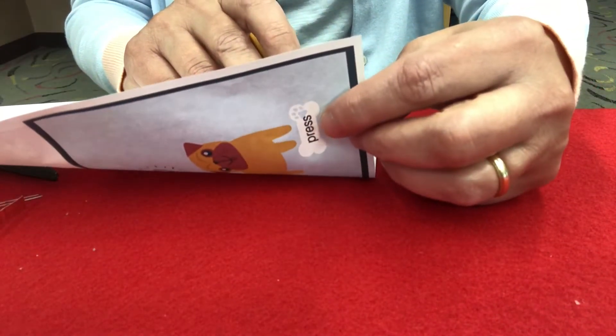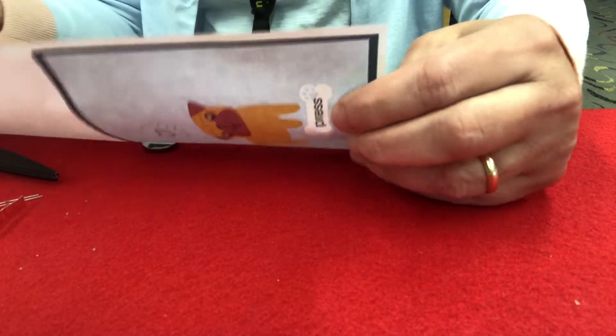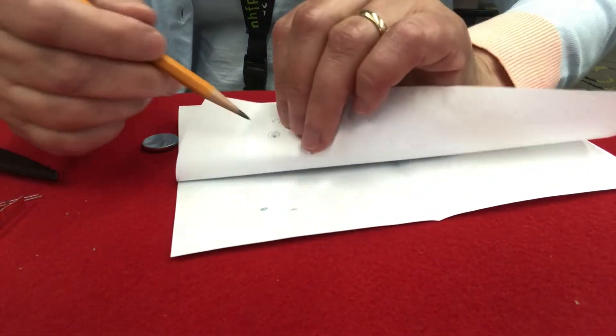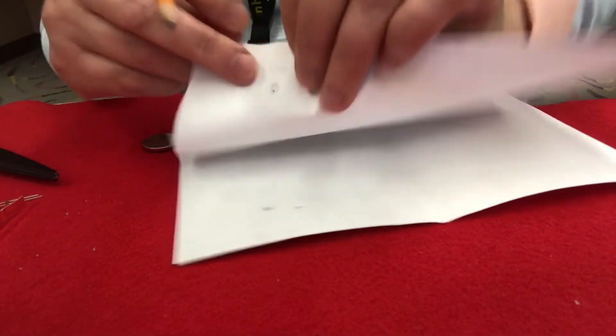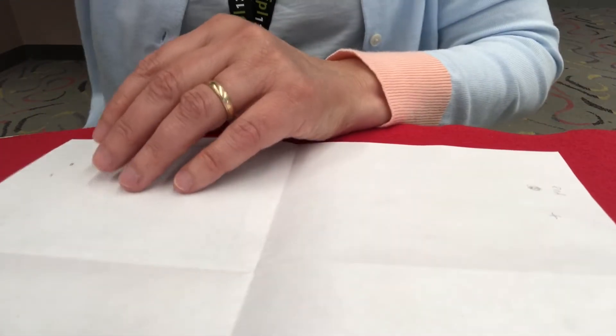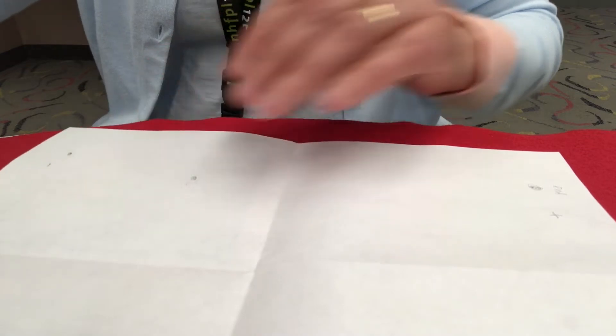And also make a mark where you want the battery to be. Mine's going to be behind the word that says press. Also, make another mark where if you fold the card over it will connect to the battery. Make a plus sign there for positive and make a negative sign next to the battery, where the battery will be, for negative.